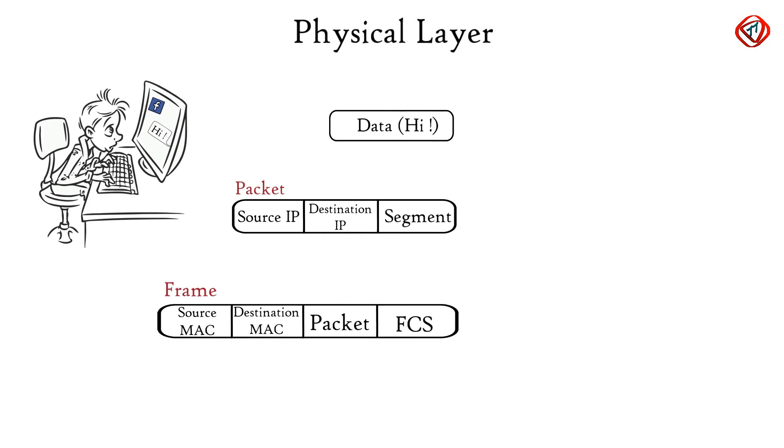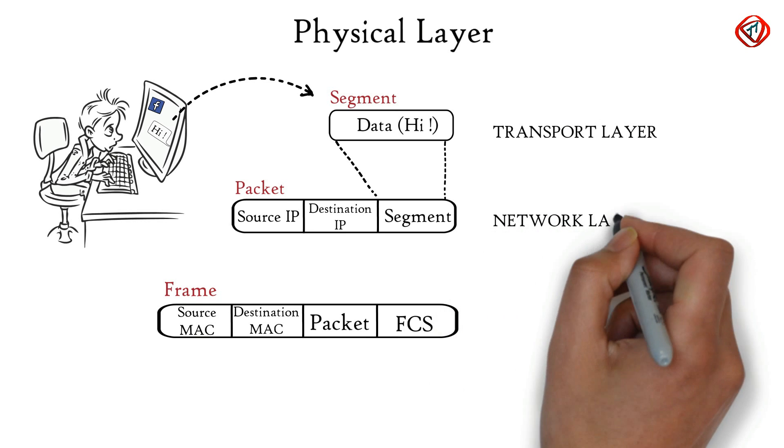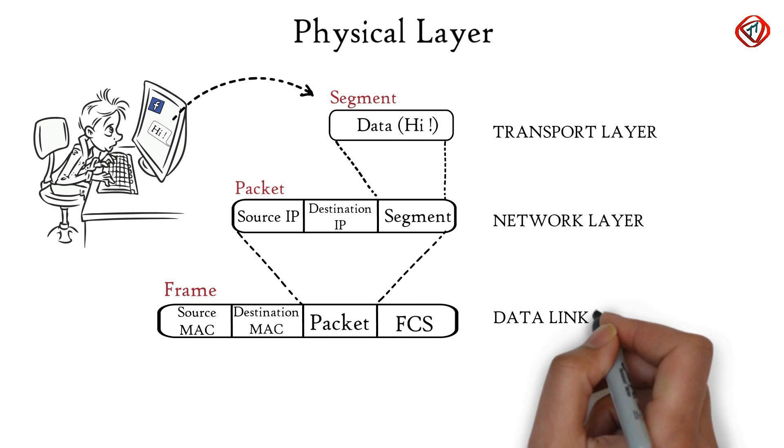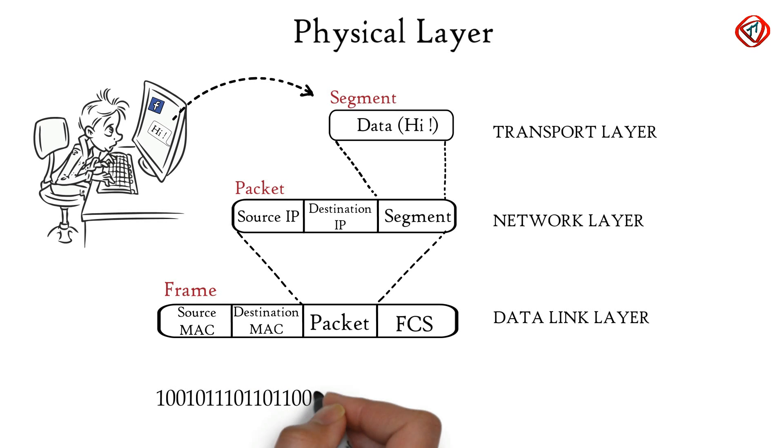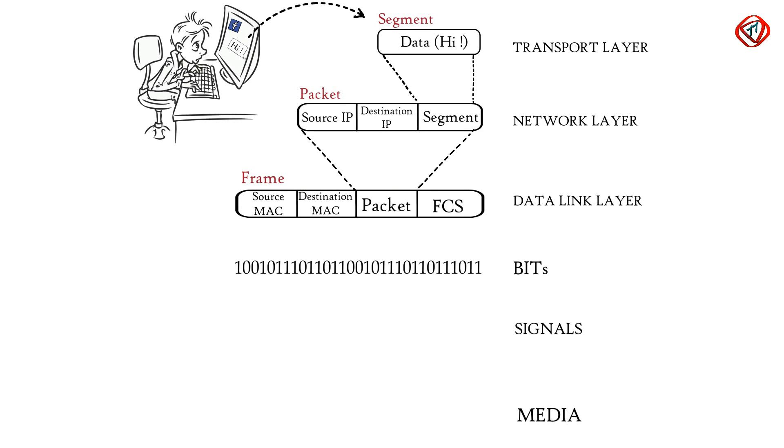The last layer is the physical layer. Till now, data from the application layer has been segmented by transport layer, placed into packets by network layer, and framed by data link layer, which is a sequence of binary 0s and 1s. Physical layer converts this binary sequence into signal and transmits over local media.